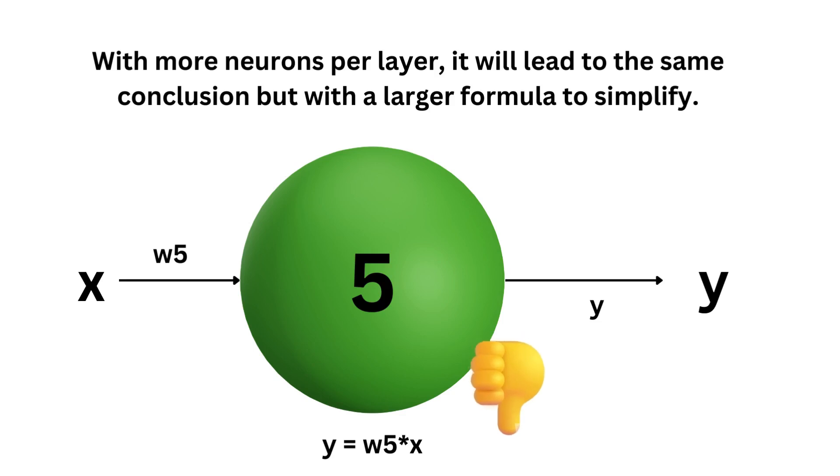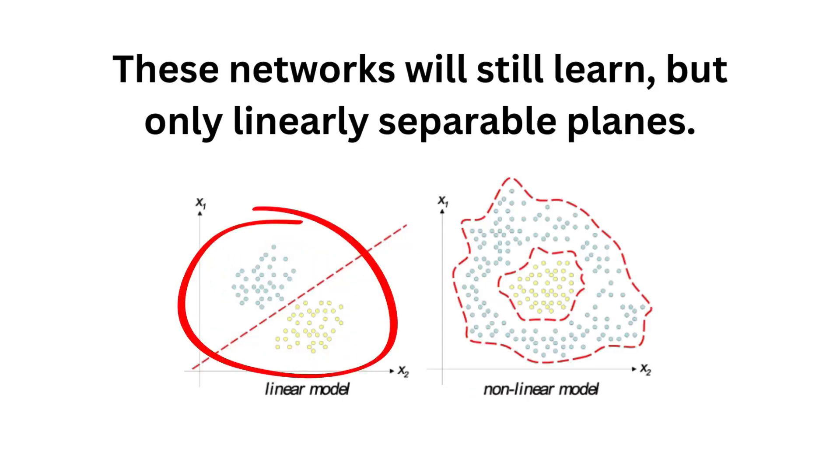With more neurons per layer and more layers, it will lead to the same conclusion but with a larger formula to simplify. So these networks with a linear activation function will still learn something, but only linearly separable planes, not non-linear ones.